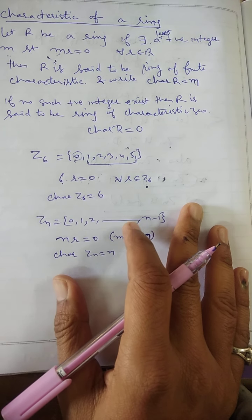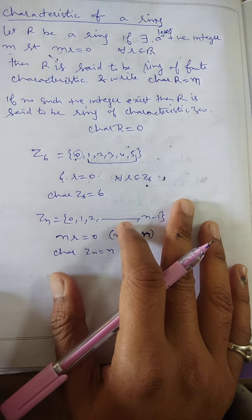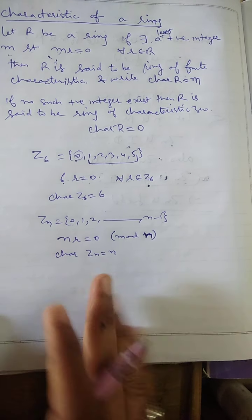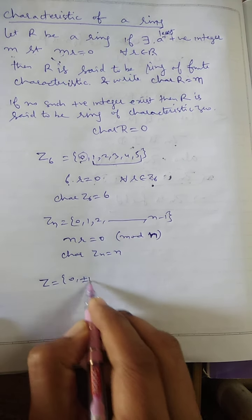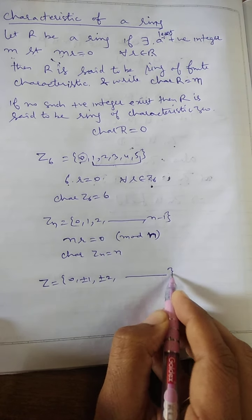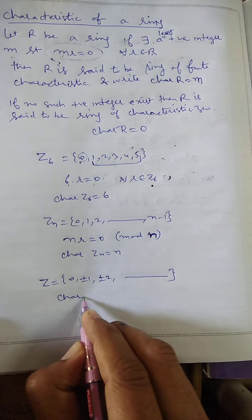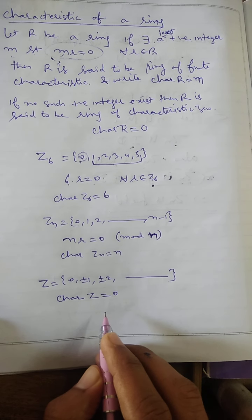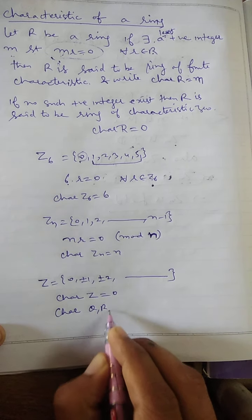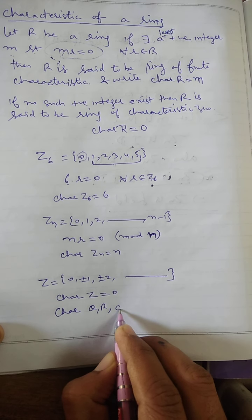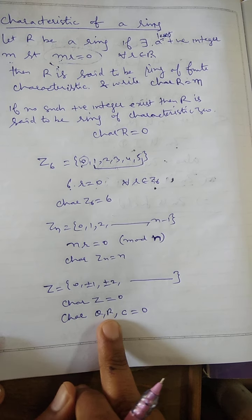But if no such finite positive integer exists, if there does not exist any positive integer N in R such that N into R equals 0, then the characteristic of that ring is 0. For example, in Z, there is no least positive integer N such that N into R gives 0 for all R in Z, so the characteristic of Z is 0. Similarly, Q, R, and the set of complex numbers all have characteristic 0, because no least positive integer exists satisfying the condition.